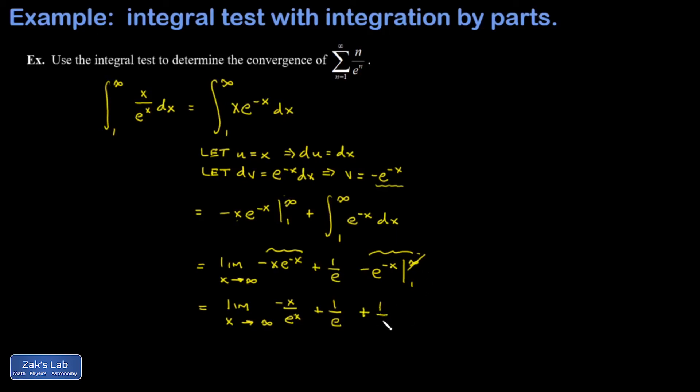Take the derivative of the numerator and denominator at the same time, I'll combine these two one over e's. And now this limit is unambiguous, I have a denominator going to infinity, a numerator that's a constant, so that's zero.